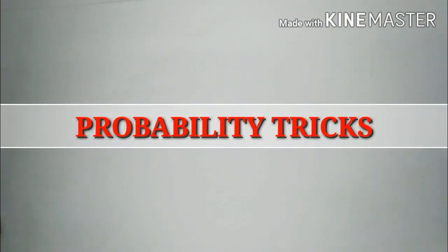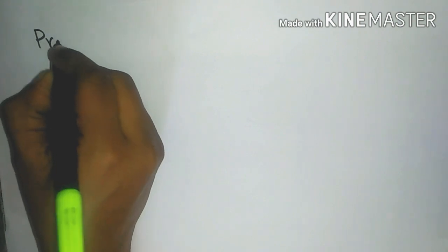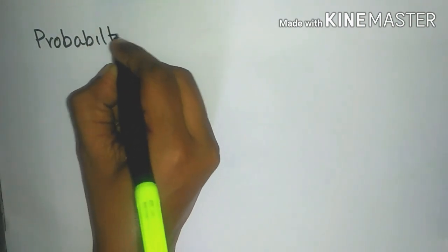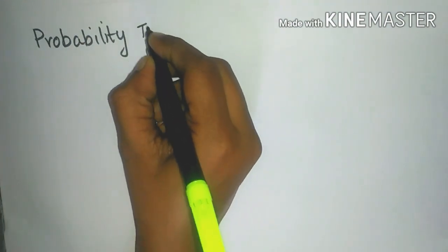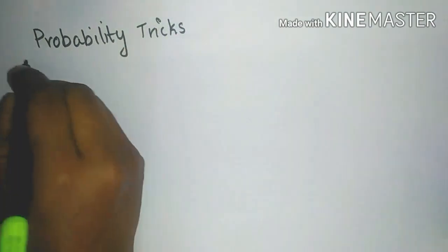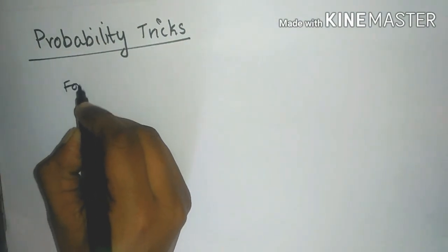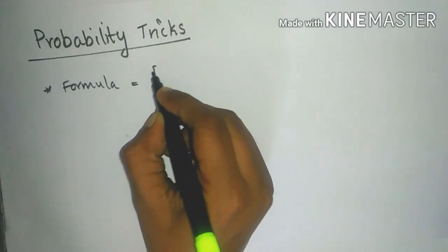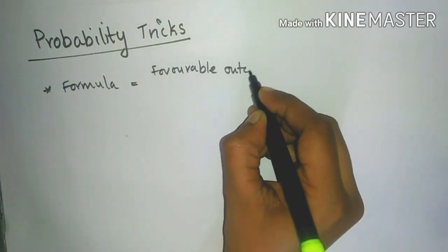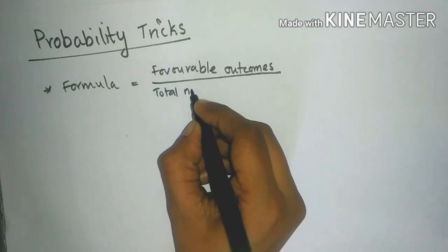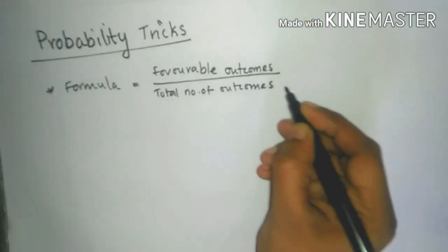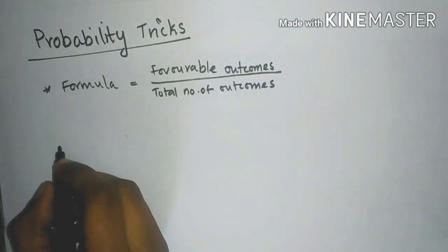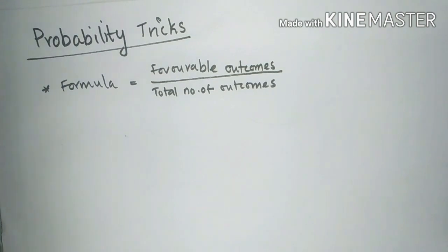Hello friends, we are going to talk about the basic type of questions in this video. We are going to discuss the basic type of questions in aptitude. The formula is favorable outcomes divided by total number of outcomes.